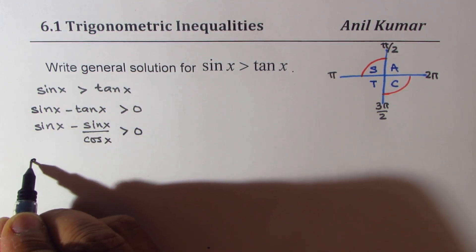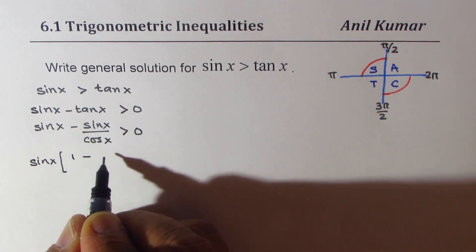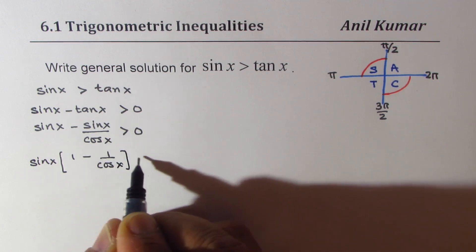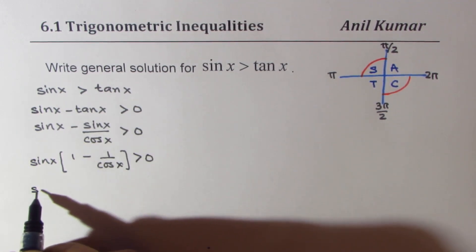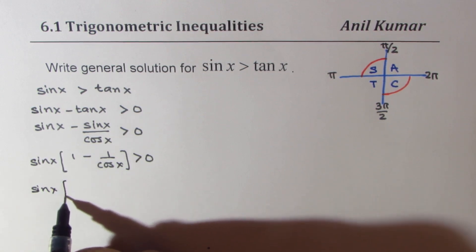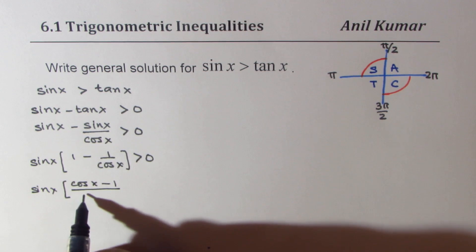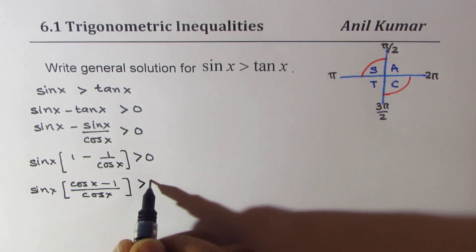Taking sin x common, we get sin x times (1 minus 1 over cos x) is greater than 0. Now we can take a common denominator here and write this as sin x times (cos x minus 1) over cos x greater than 0.